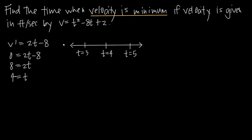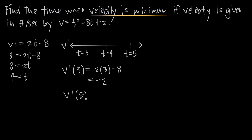I like to label the number line with v prime to remind me that we're testing values in the derivative function v prime. Plugging t equals 3 into v prime: v prime of 3 equals 2 times 3 minus 8, which gives 6 minus 8, or negative 2. Then plugging t equals 5 into v prime: v prime of 5 equals 2 times 5 minus 8, which gives 10 minus 8, or positive 2.